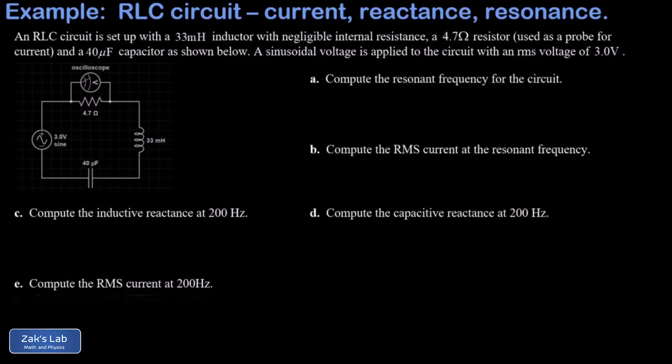In this video, we're given an RLC circuit, and we know the value of the inductance is 33 millihenrys, and we're told that inductor has negligible resistance. Our resistor has 4.5 ohms resistance, our capacitor is 40 microfarads, and we have this sinusoidal voltage applied to the circuit with an RMS value of 3.0 volts.